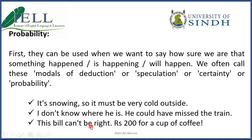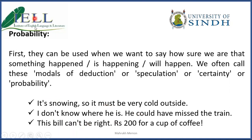'This bill can't be right — 200 rupees for a cup of coffee.' Here I'm assuming this is not right based on my prior knowledge that a cup of coffee is cheaper than that. So this is how we use modal verbs like must, could, and can't for showing probability.